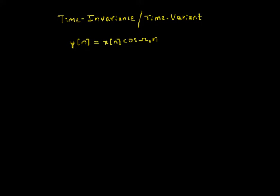Welcome to the video lecture on time invariance of a system. In this video, we will consider a discrete time system y[n] = x[n]cos(ω₀n). The task is to determine if this system is time invariant or time variant.